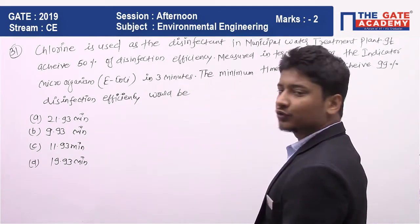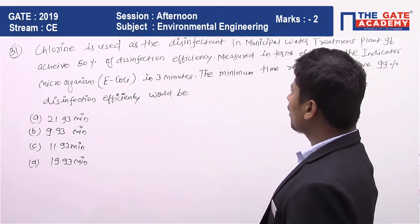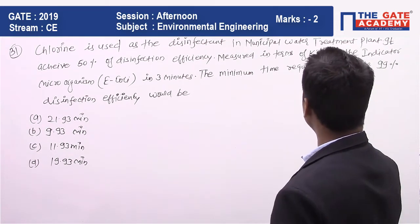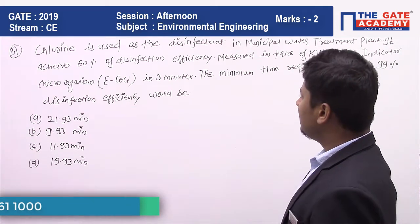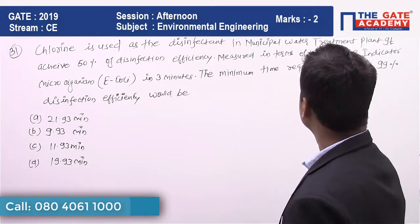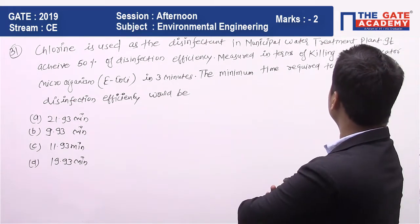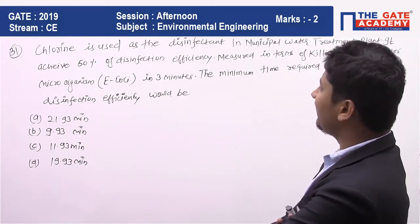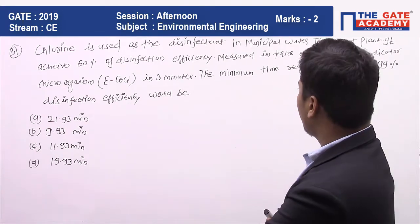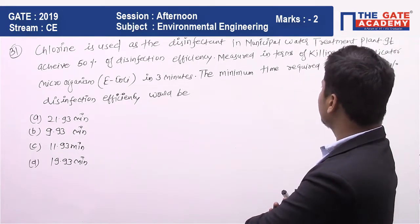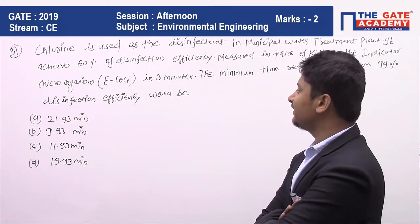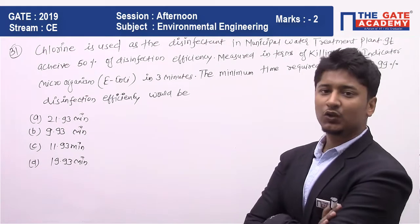The question states: chlorine is used as a disinfectant in a municipal water treatment plant. It achieves 50% disinfection efficiency, measured in terms of killing the indicator microorganism — which is E. coli — in three minutes. The minimum time required to achieve 99% disinfection efficiency is to be determined.